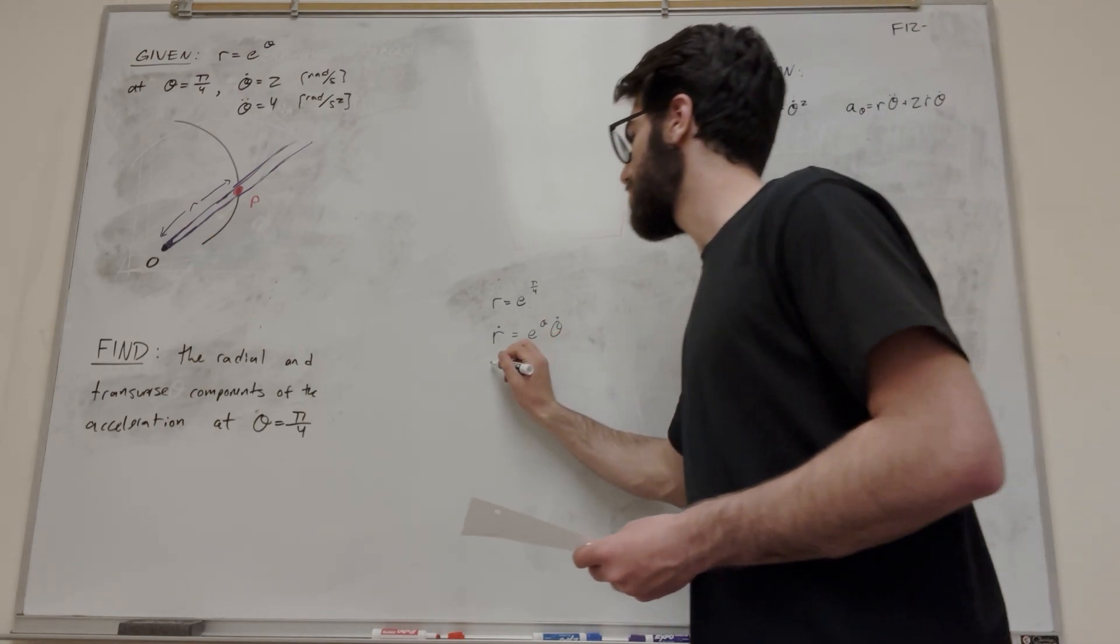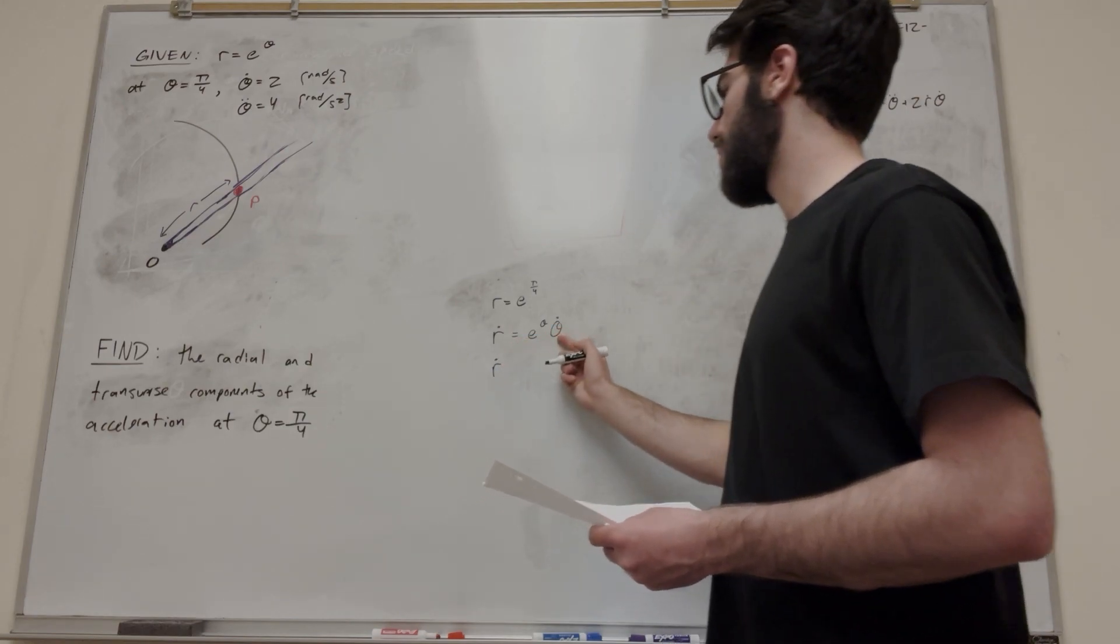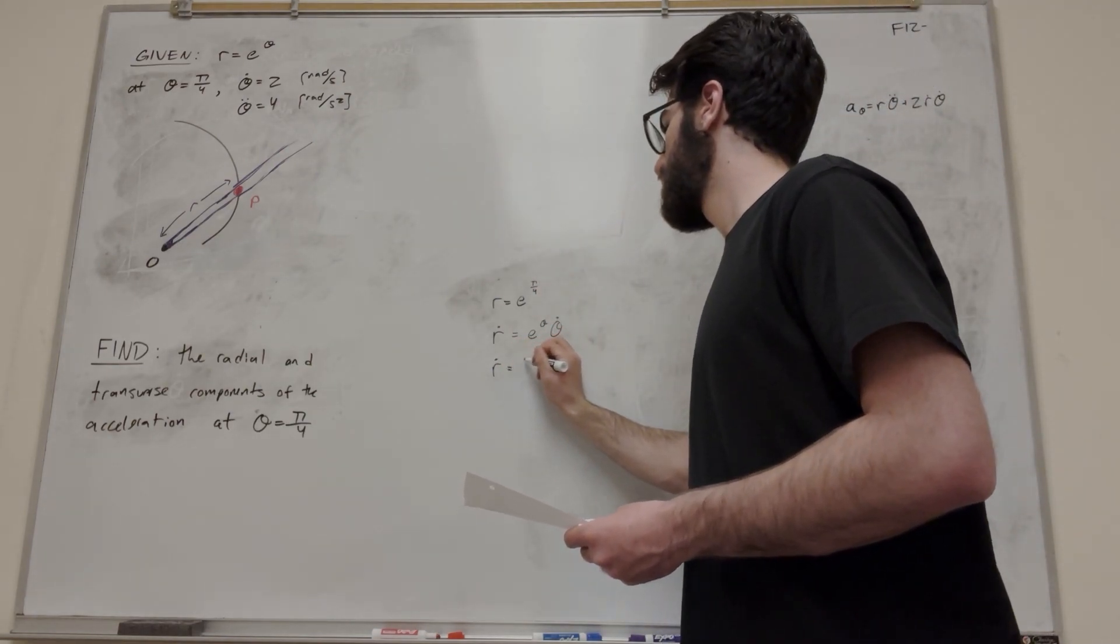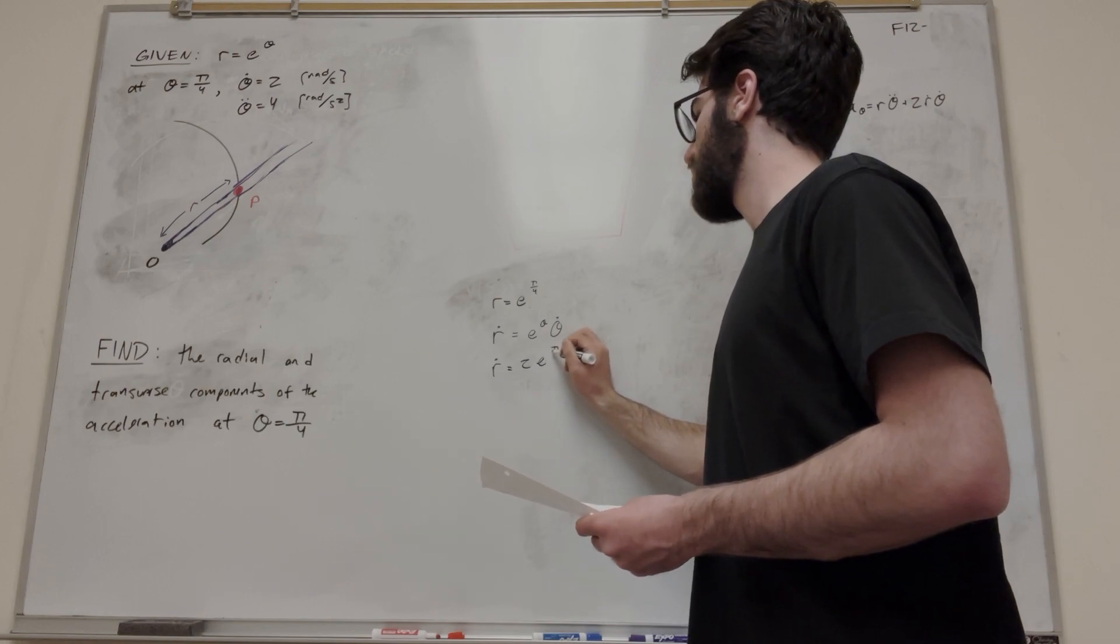So now let's plug in the numbers we know. First of all, theta dot, we know that's equal to 2 at this time. So we have 2 e to the pi over 4.